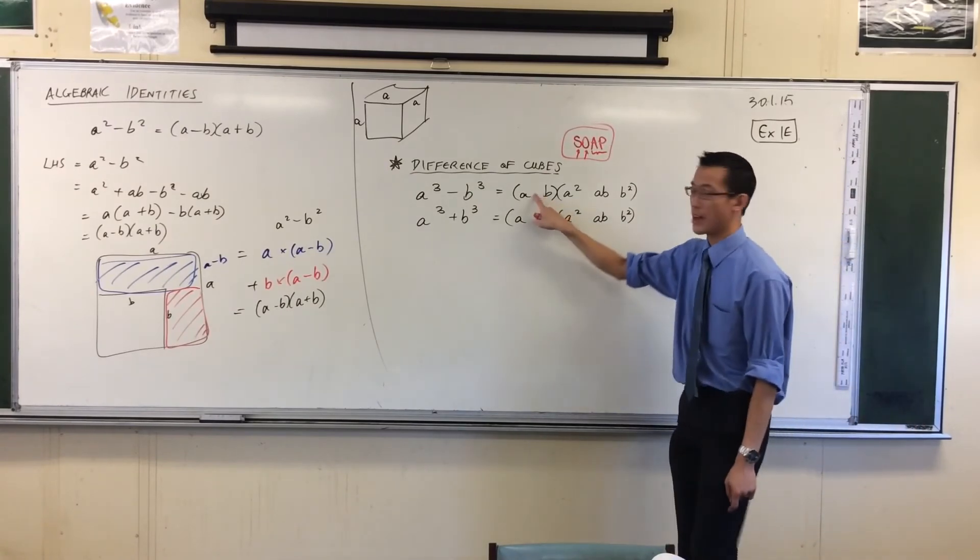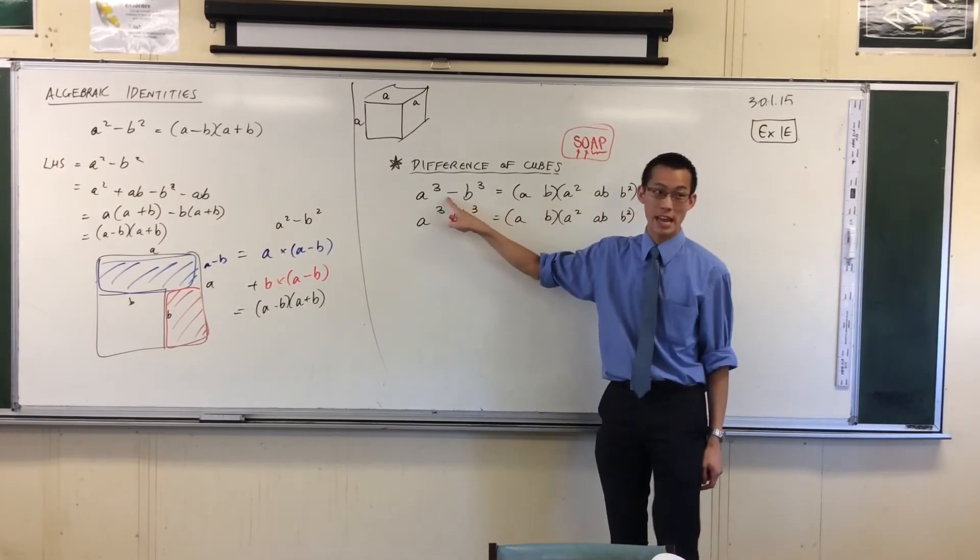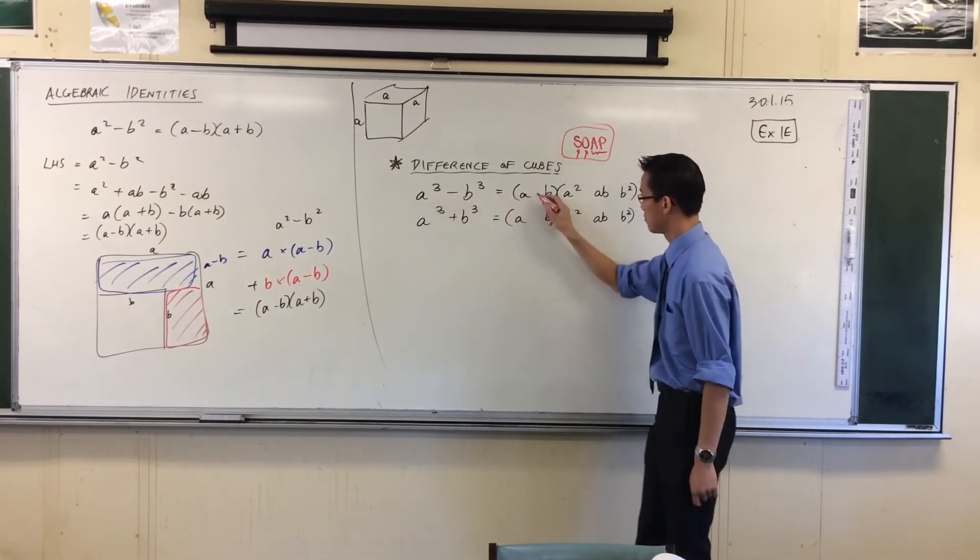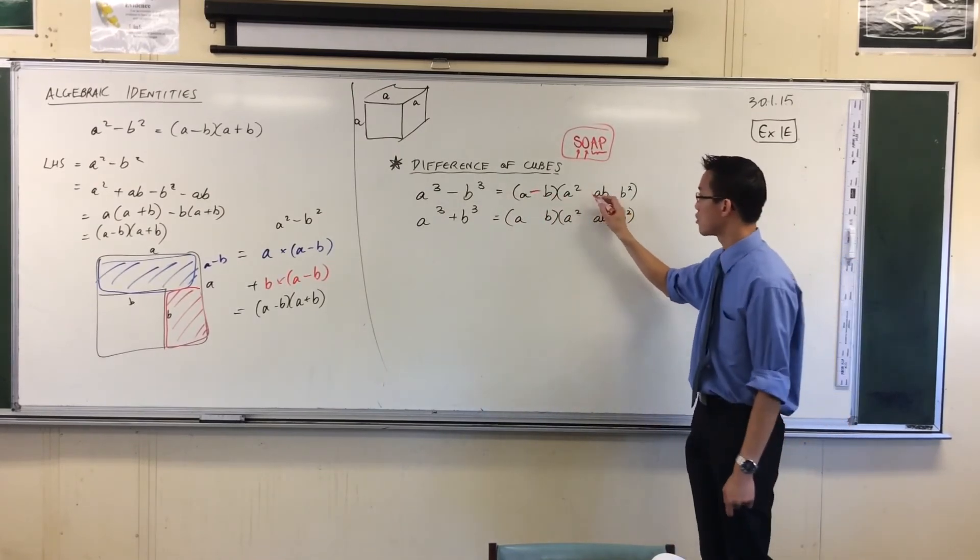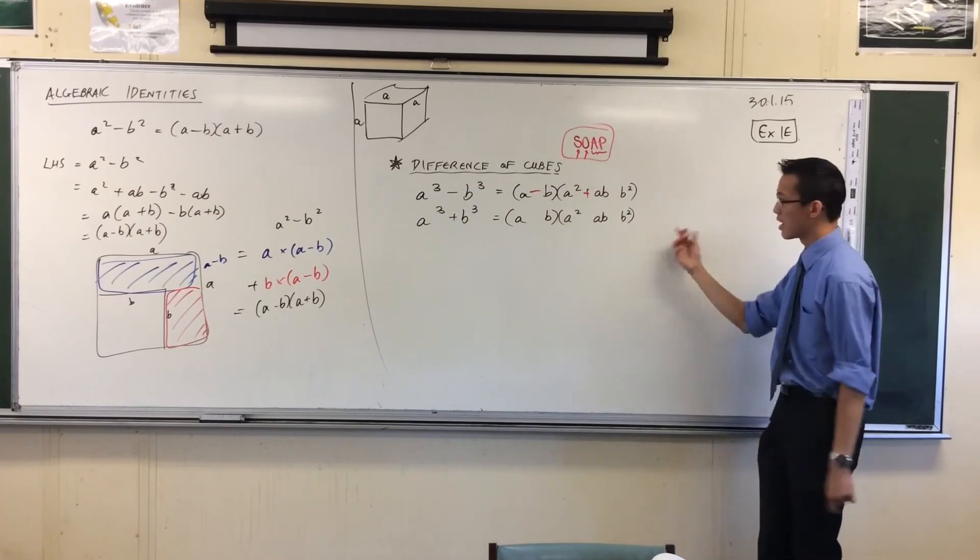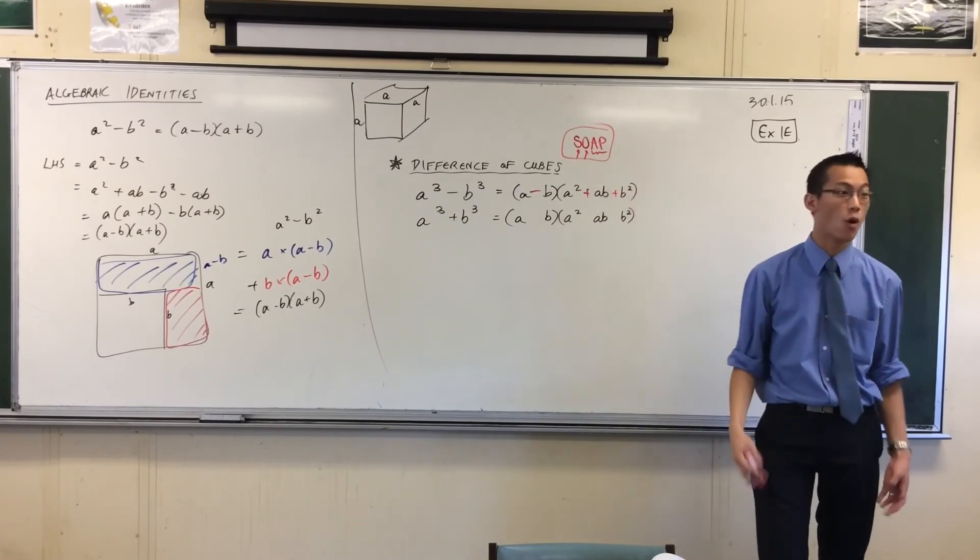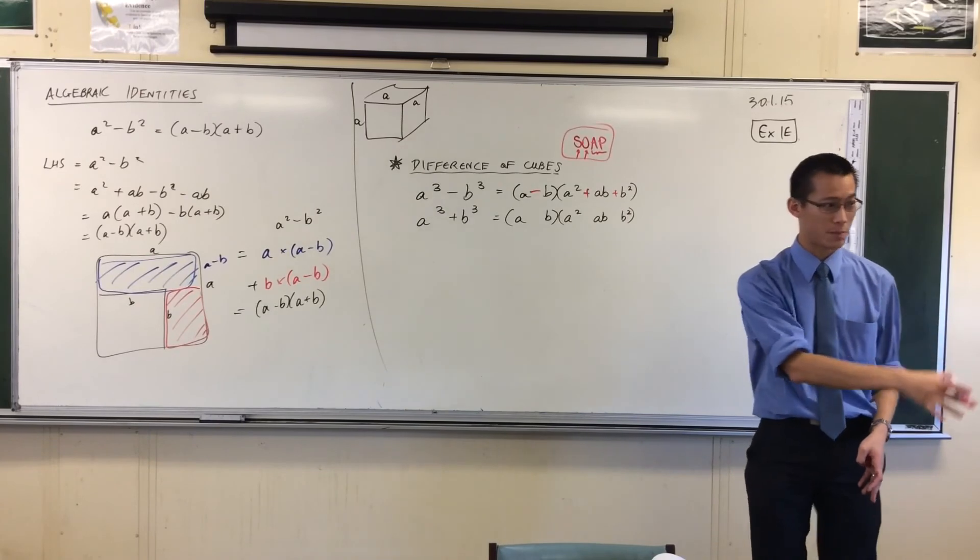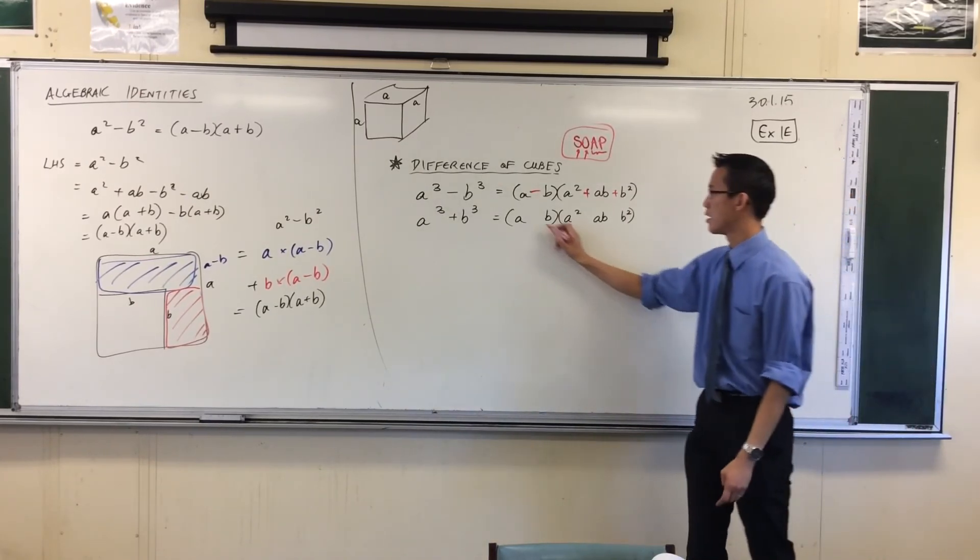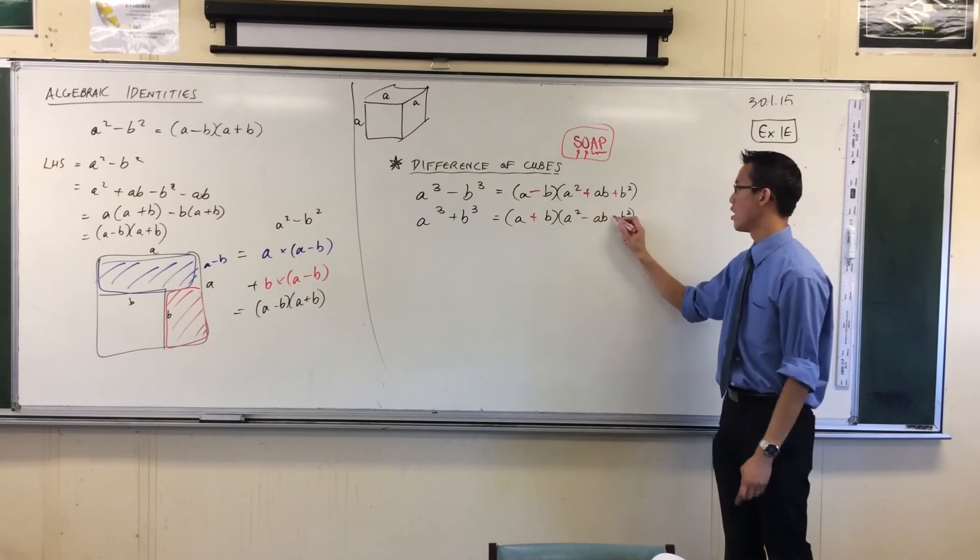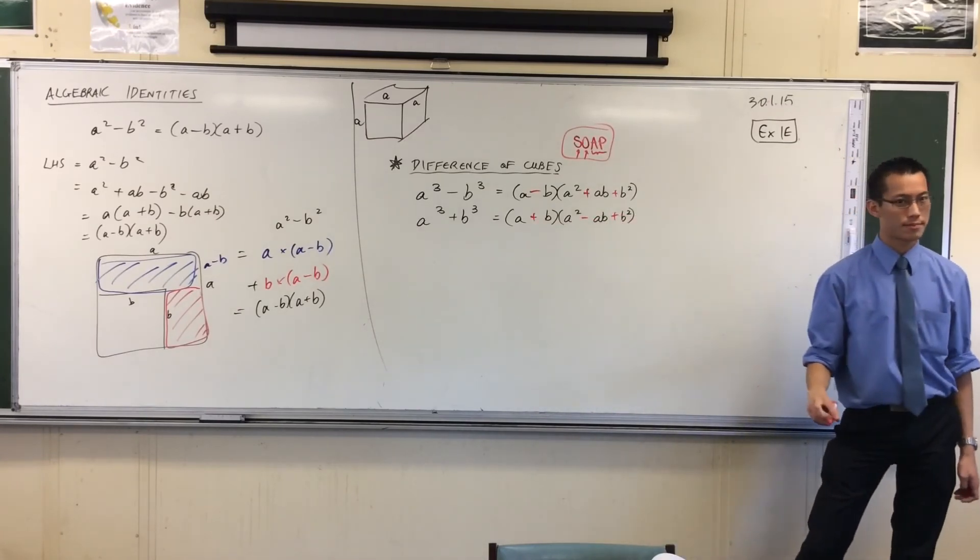Because there are three signs, okay? So watch. First sign, okay? It's going to be the same as whatever you're factorizing. It's the same. The next one will be the opposite, which in this case will be plus. And then the last one, regardless of what you're factorizing, is always positive. Same, opposite, always positive. Very easy result. And you can use it just as simply for the sum of cubes. Same, opposite, always positive. Same, opposite, always positive.